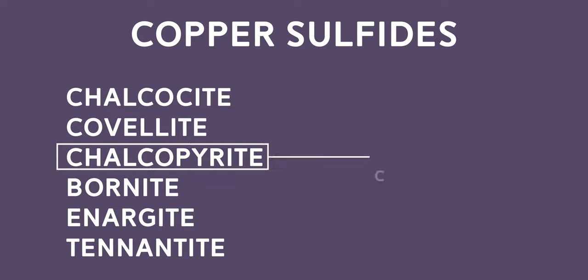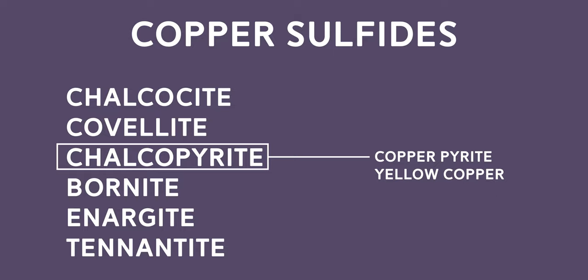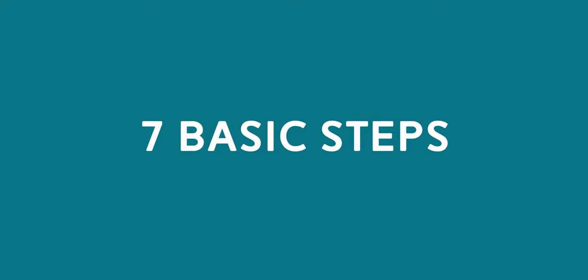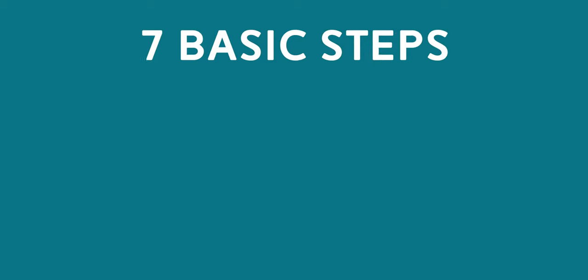Chalcopyrite is also known as copper pyrite or yellow copper. There are several steps involved in making pure copper, but in this video we are going to see 7 basic steps.